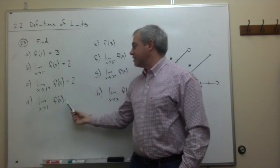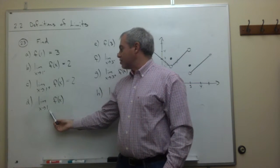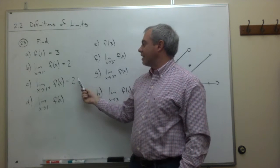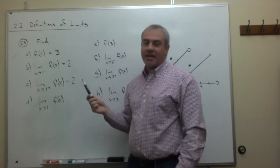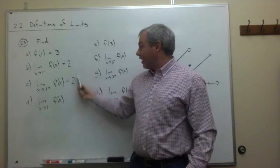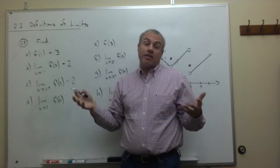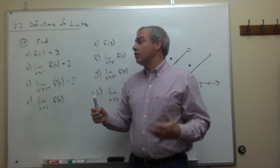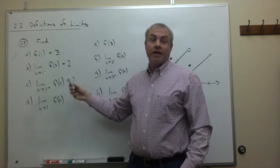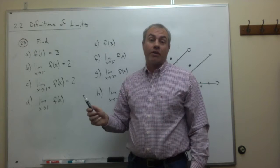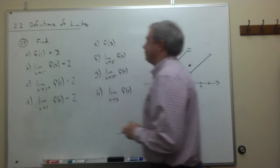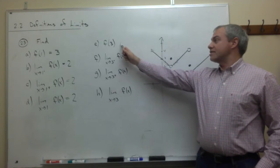Part d asks: what's the limit as x goes to 1 of f(x)? This is asking whether the left-hand limit and the right-hand limit agree. If they're the same, that common value is the answer. If they're different, there's no limit. In this case they do agree, so the answer for this limit is also 2.